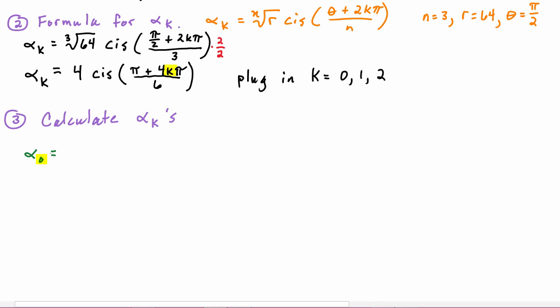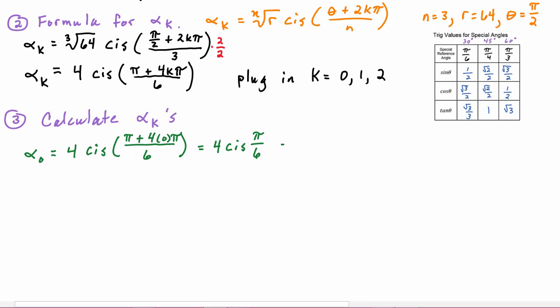α₀ is going to equal 4 cis((π + 4(0)π)/6), which becomes 4 cis(π/6), which becomes 4 times the quantity - let's do this in our heads - the cosine of π/6 is √3/2 plus i times the sine of π/6, which is 1/2. Distributing the 4, we get 2√3 + 2i, and that is α₀.